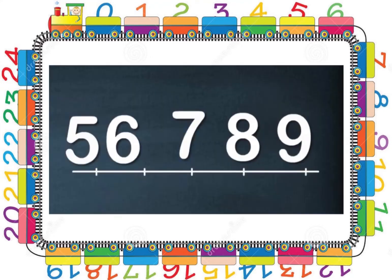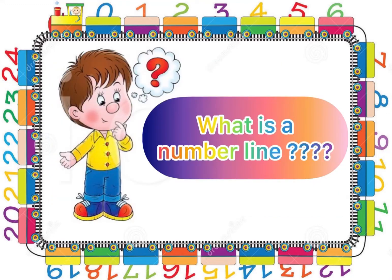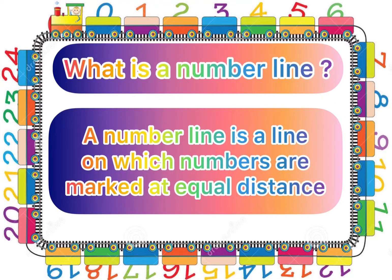So children, this is how we get the number line. Now you all must be wondering what is a number line? So let me tell you — a number line is a line on which numbers are marked at equal distances.